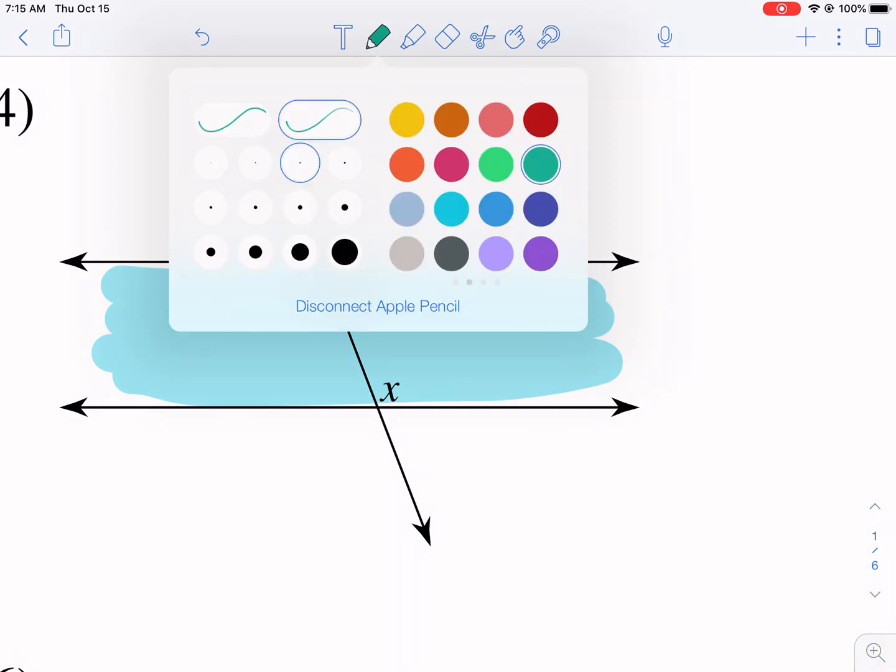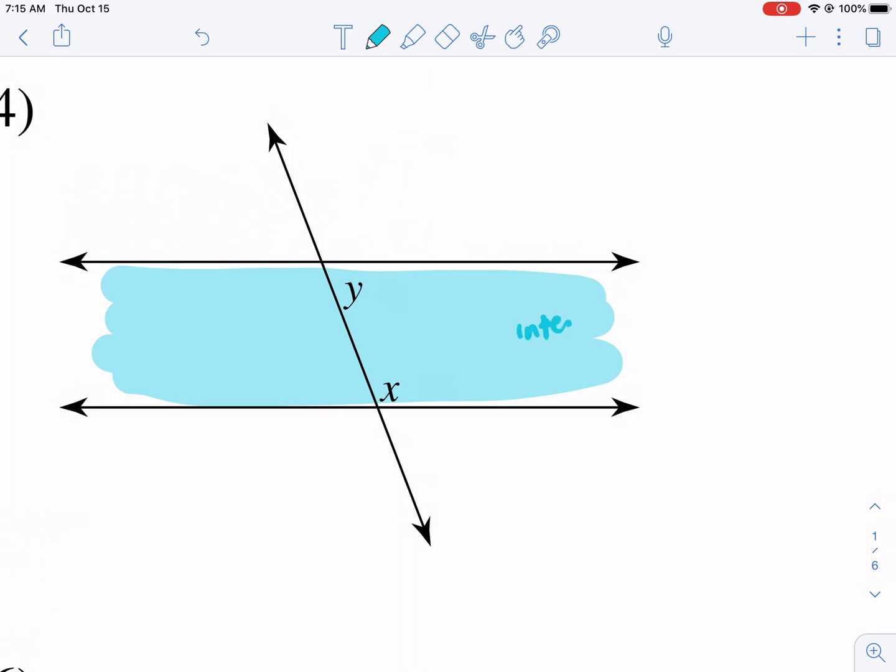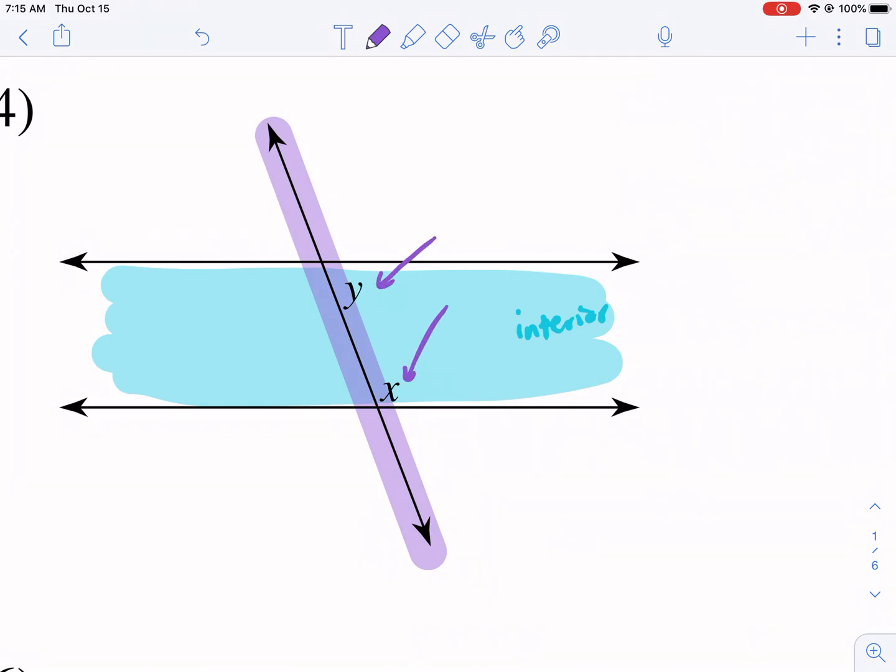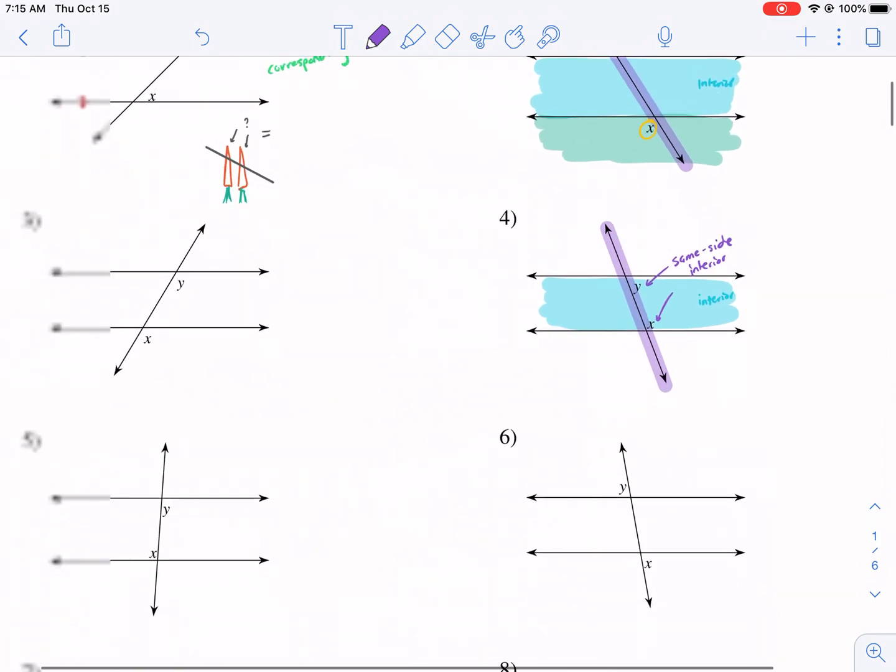Look how this Y is in the southeast portion, this X is in the northeast portion, so they're not in the corresponding parts of the intersection. They are both in the interior though, so that is something going for them, but they're not on alternate sides of the transversal. They are on the same side of the transversal. So what does that mean? That makes them same side interior angles.